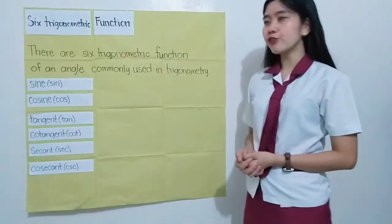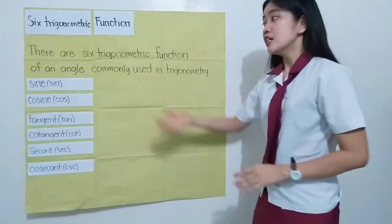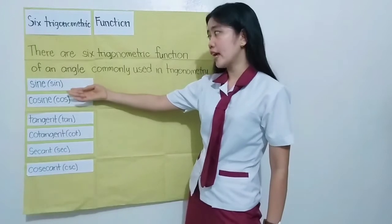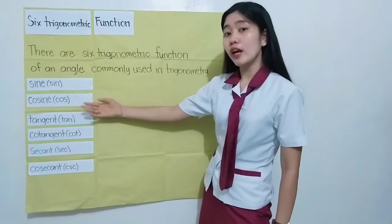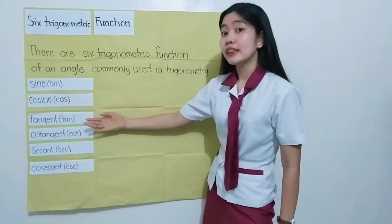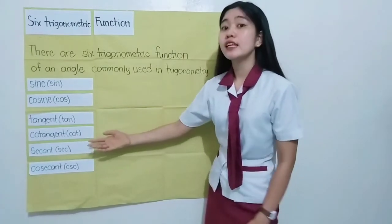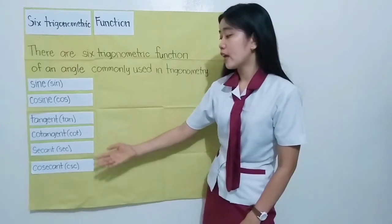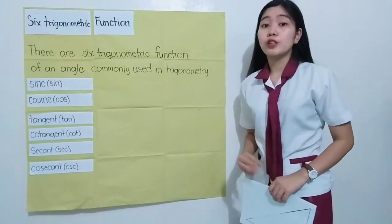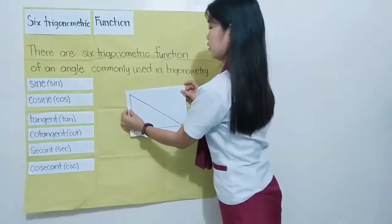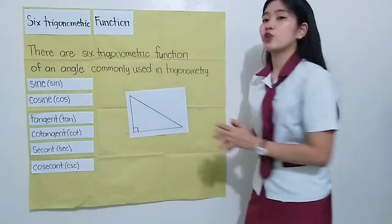There are six trigonometric functions of an angle commonly used in trigonometry: sine (abbreviated sin), cosine (abbreviated cos), tangent (abbreviated tan), cotangent (abbreviated cot), secant (abbreviated sec), and cosecant (abbreviated csc). With the use of a right triangle, we can identify our six trigonometric functions.